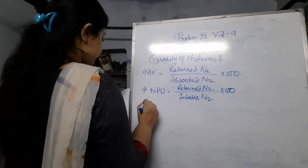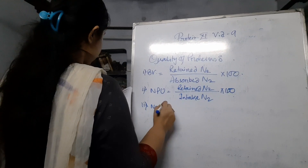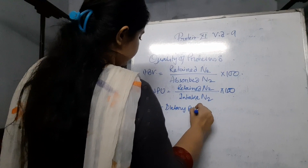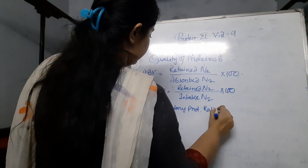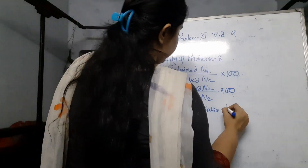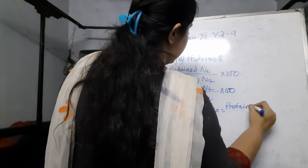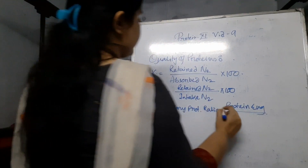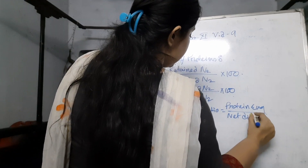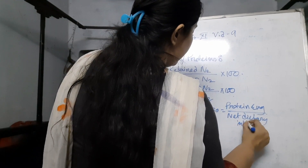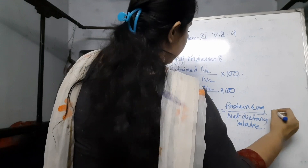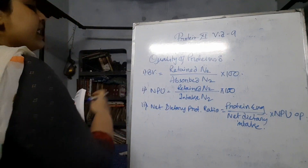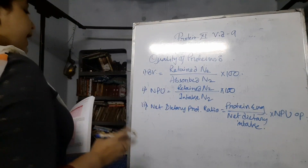Next is Net Dietary Protein Ratio. What is it? It is like protein energy — the energy coming only from protein — by net dietary intake. The full amount that we are taking, into NPU. So we have to use the NPU value here also.